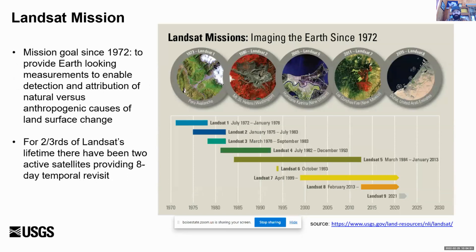A lot of folks are familiar with Landsat — we've been operating since 1972. The mission goal really hasn't changed: to provide Earth-looking measurements to enable attribution and detection of natural versus anthropogenic changes in land surface. We've seen an acceleration of applications using Landsat data, particularly in the aquatic areas, so we're considered more of a workhorse satellite mission. For pretty much two-thirds of Landsat's lifetime, there have been two active satellites providing eight-day temporal coverage. Sixteen days is commonly associated with Landsat, but we've actually had eight-day temporal revisit for the bulk of the record.